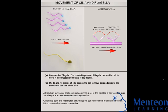A cilium, which is Latin for eyelash, and the plural of which is cilia, is an organelle that is found in eukaryotic cells. Cilia are slender protuberances that project from the much larger cell body.